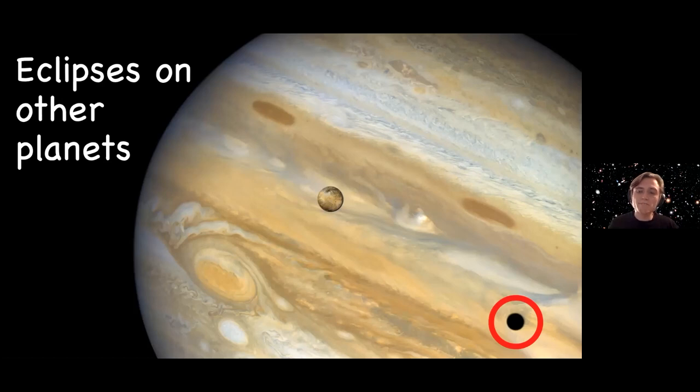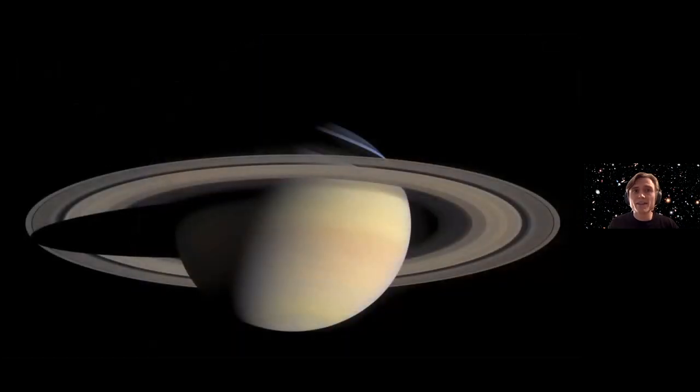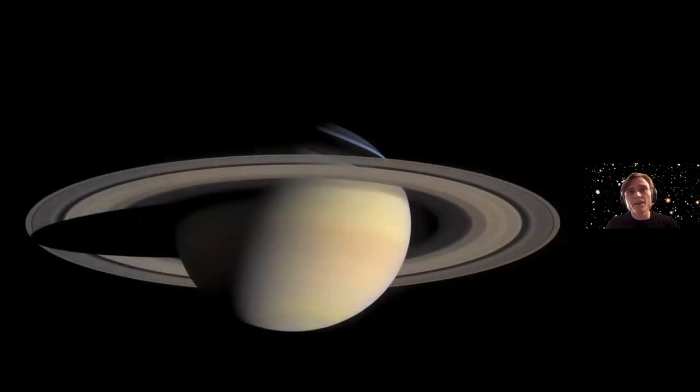But eclipses aren't just property of planets and moons. You can have them on rings as well. Here's another incredible example from Saturn. Now, this image is taken by the Cassini space probe, which has burnt up in Saturn's atmosphere. But you can see a lot of cool stuff going on. You can see Saturn's shadow being cast on Saturn's rings. And you can also see the rings of Saturn casting a shadow on Saturn itself. So all of these objects in space can cast shadows all over the place.